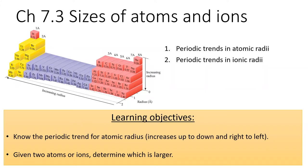We will also see that cations are smaller and anions are larger than their parent atoms.